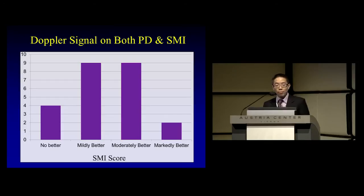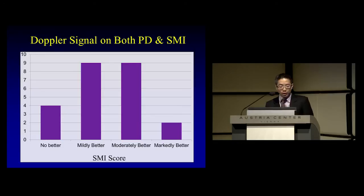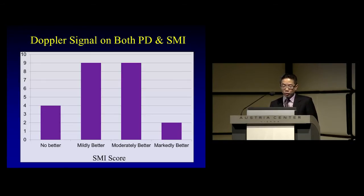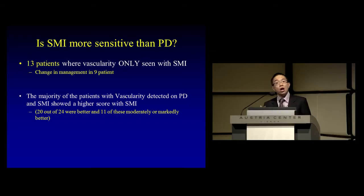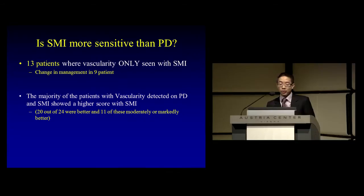When we saw Doppler signal on both Power Doppler and SMI, we applied a grading score from zero to three — whether SMI was no better, mildly better, moderately better, or markedly better than Power Doppler. In only four cases did we feel it was no better than Power Doppler. In the majority of cases — more than half — it was moderately or markedly better. In 13 patients, we were able to detect vascularity only seen with SMI, and this changed clinical management, either by directing steroid injection or starting disease-modifying drugs.